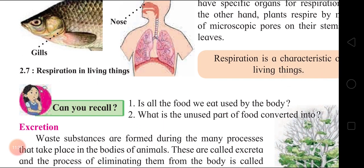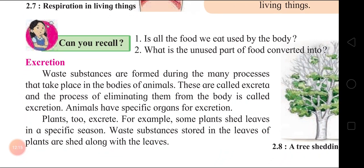Can you recall: is all the food we eat used by the body? The answer is: all the food that we eat is not used by the body. Some part which is not essential and some which is not digested is thrown out of the body. The unused food is converted into excreta or faeces. Excretion means: waste substances are formed during the many processes that take place in the bodies of animals. These are called excreta, and the process of eliminating them from the body is called Excretion.